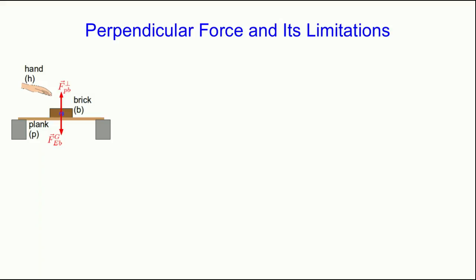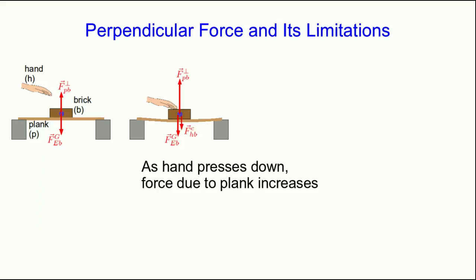So imagine that the brick is just sitting on the plank, and we know that there's an upward perpendicular force due to the plank acting on the brick, and that it balances the downward gravitational force on the brick. Now, if you press down a little bit on the brick, then the upward force by the plank has to increase, because the acceleration of the brick is zero, and so the vector sum of forces still has to be zero. And so that force increases to maintain a vector sum of forces equaling zero.